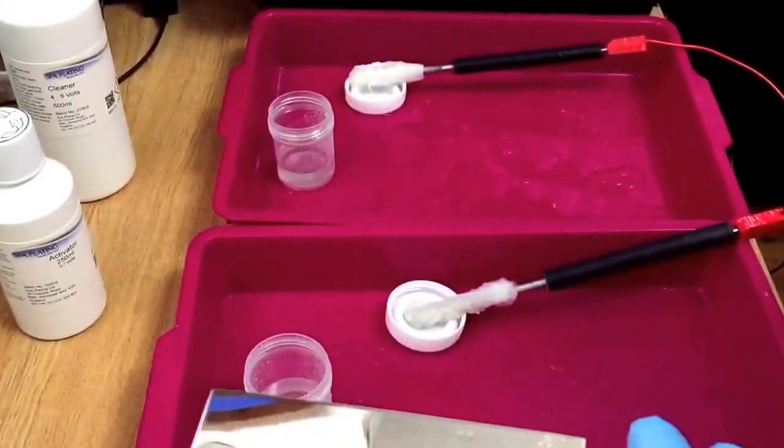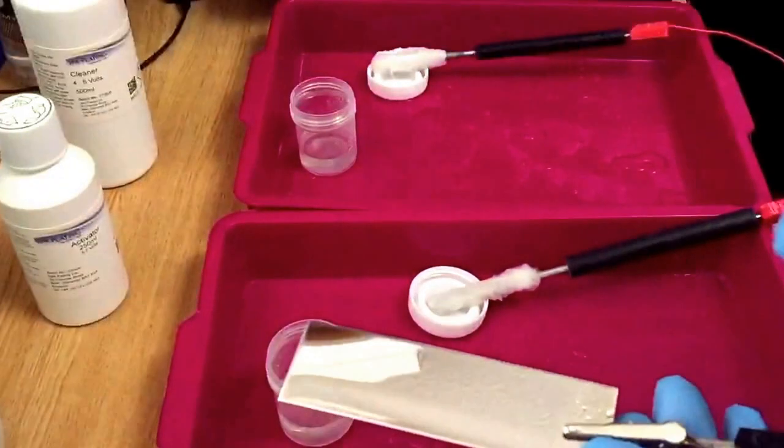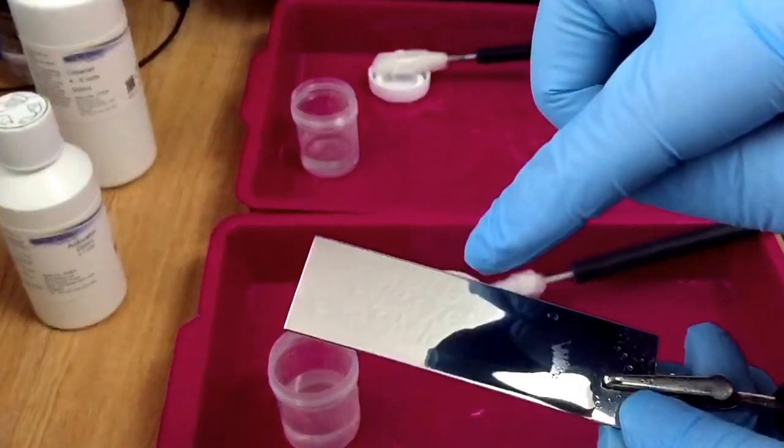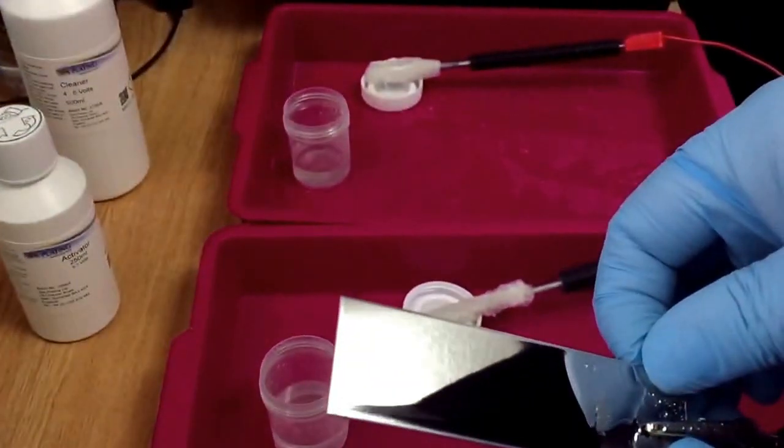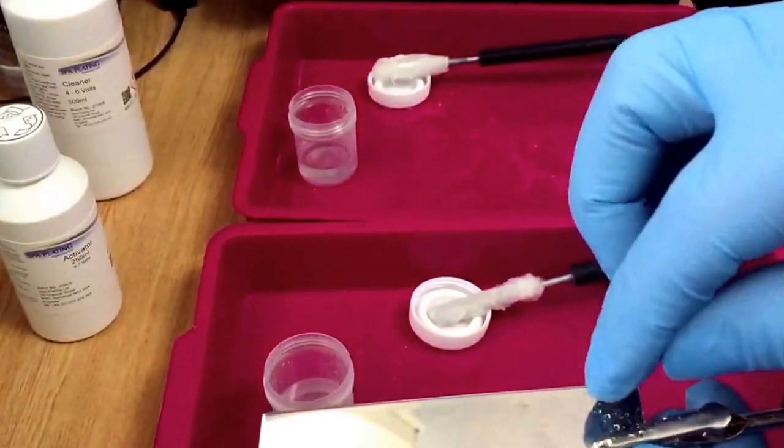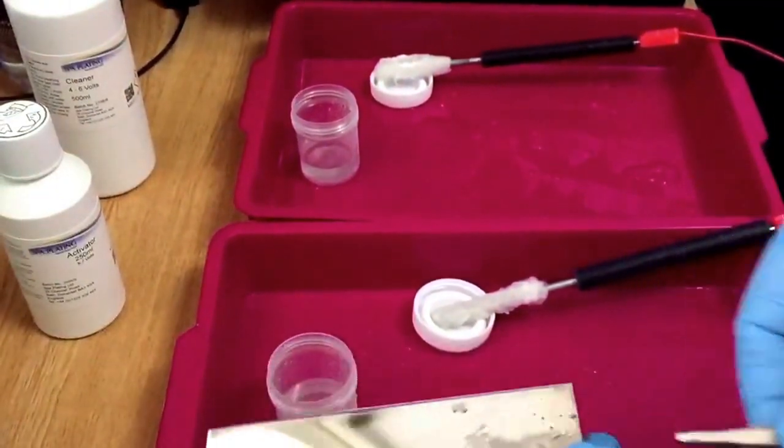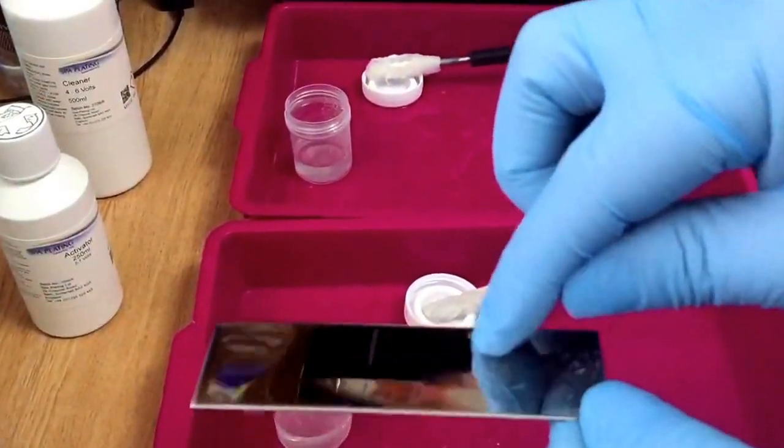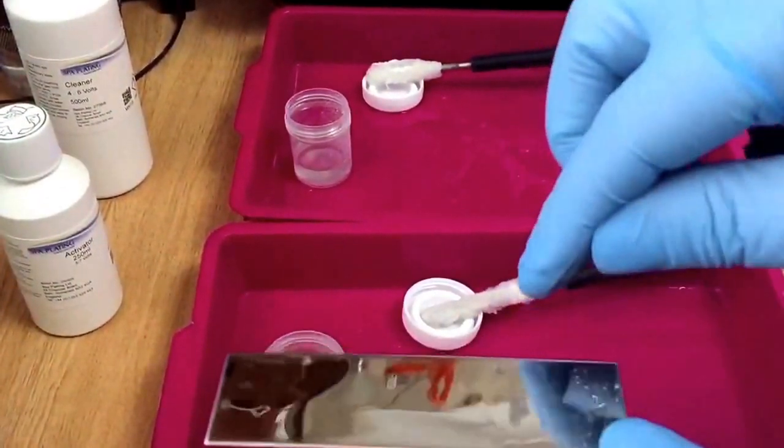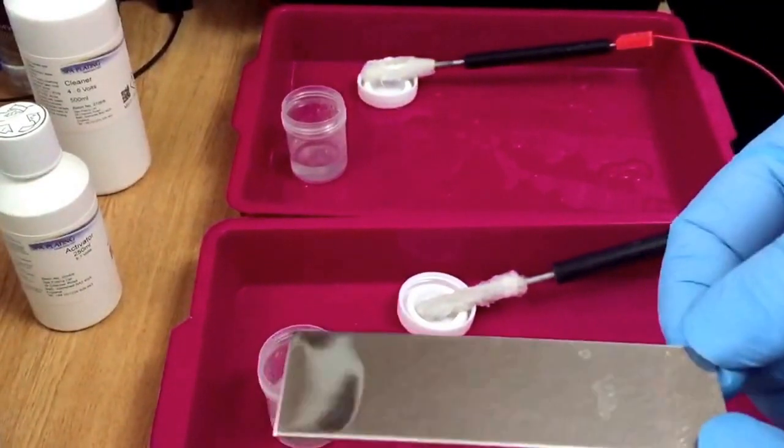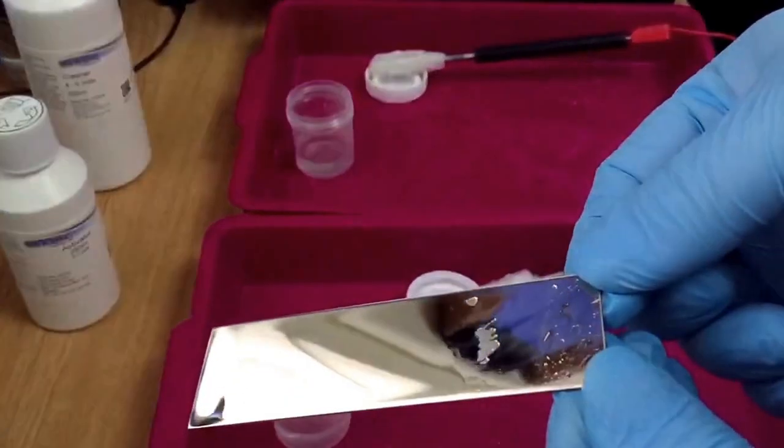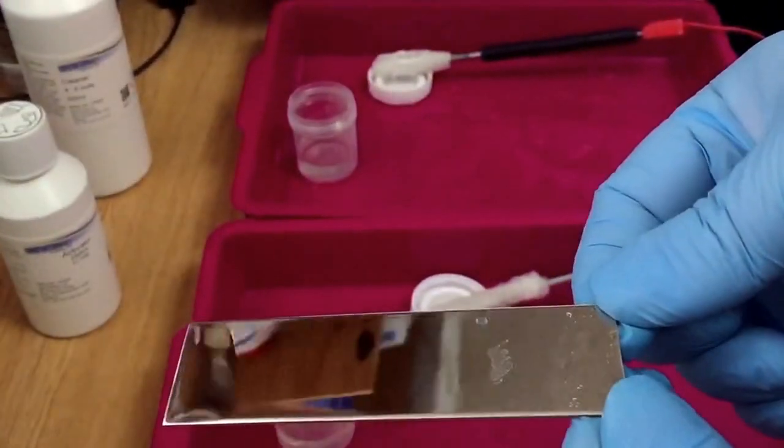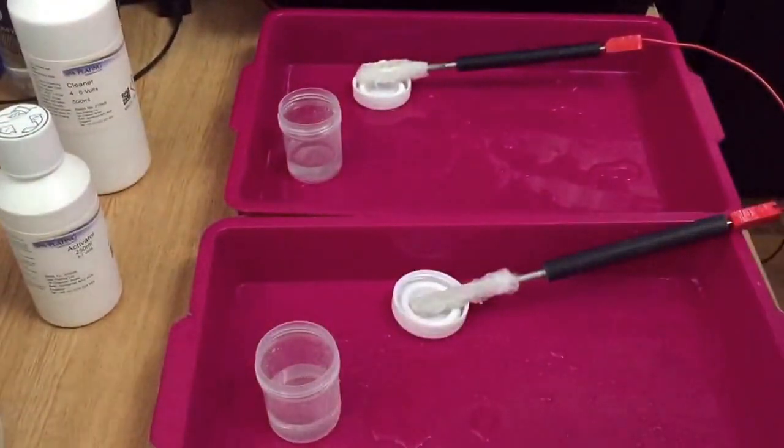You can see the area what I didn't activate. This is activated, there's no water breaks at all. It's completely clean and activated. There are water breaks where I didn't activate it. Now you can rinse it and brush plate gold straight on. Tank plating is a different story on stainless steel, much more complicated.